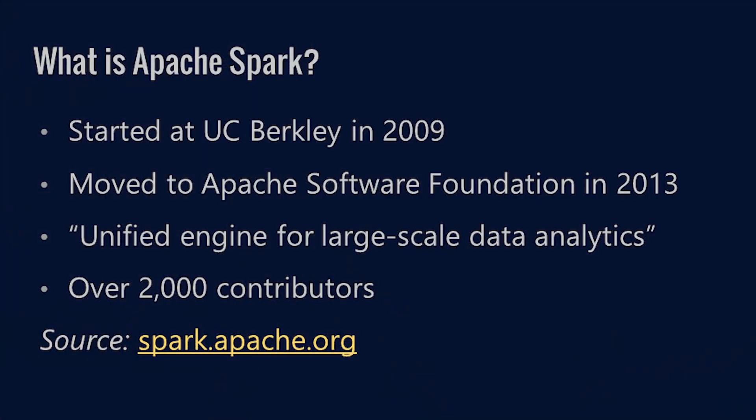Apache Spark was created at UC Berkeley's AMPLab back in 2009 and was open sourced soon after. As it gained popularity, in 2013 it was moved to the Apache Software Foundation, an organization that supports many large open source software projects. The spark.apache.org website describes Spark as a unified engine for large-scale data analytics, used for data engineering, data science, and machine learning use cases. The project has a lot of community use and involvement, indicated by having over 2,000 contributors.